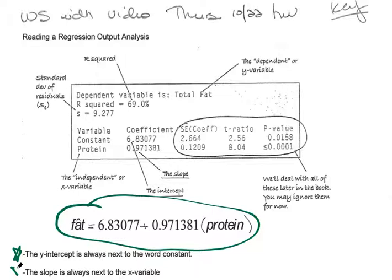To come up with the equation, these are the two pieces of information that you need. The y-intercept is always next to the word constant, so you'll look for the word constant and here is the y-intercept.